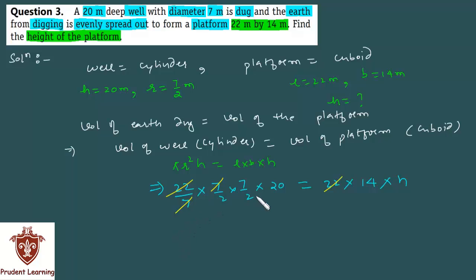So here 22 gets cancelled on both the sides, these two 7s get cancelled with each other. 2 tens are 20 and 2 fives are 10, so here we have 7 fives are 35 in the left hand side and we are left with 14h on the right hand side.